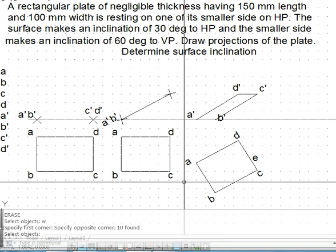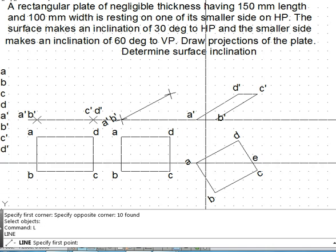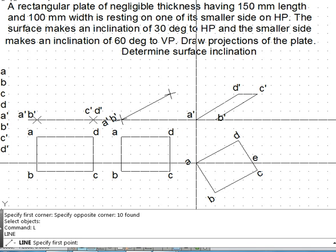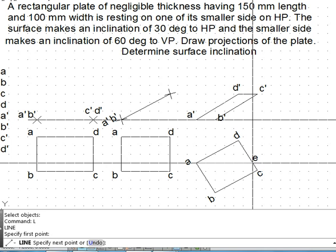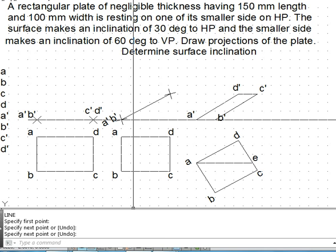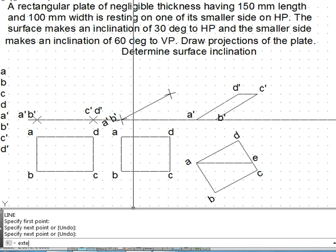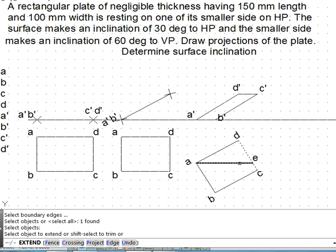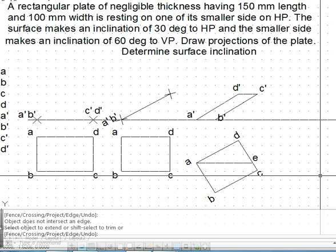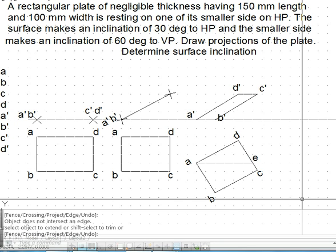AB's top view is not parallel to XY line, so we do not have any true length present in the front view. To get that true length we need to make a dummy line parallel to XY line in top view. We start from point A and make a horizontal line, drawing line AE such that it is horizontal, extending up to line DC.